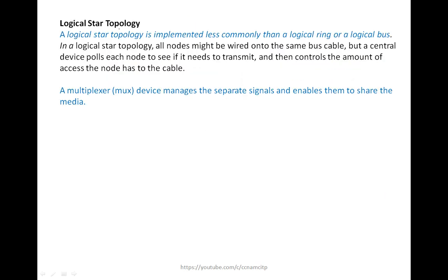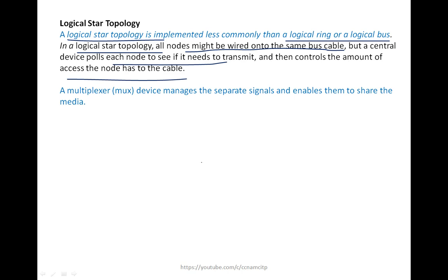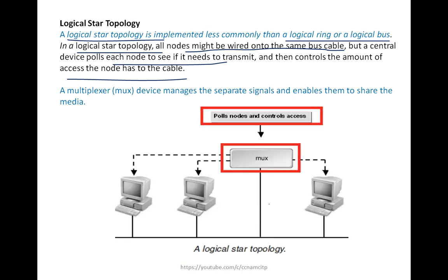A logical star topology is implemented less commonly than logical ring or bus topology. In a logical star topology, all nodes might be wired onto the same bus or circle, but a central device — a multiplexer (MUX) — polls each node to see if it needs to transmit and controls the amount of access the node has to the cable. The MUX device manages the separate signals and enables them to share the media, forwarding signals to the appropriate destination node.